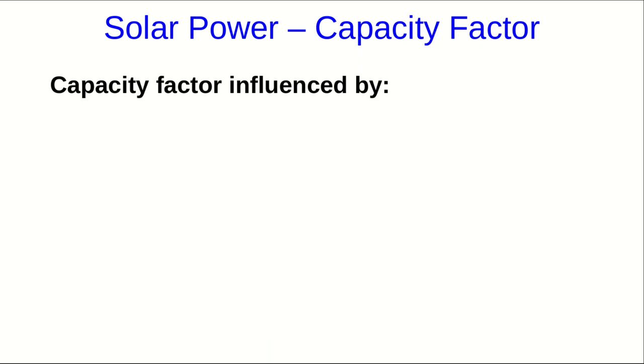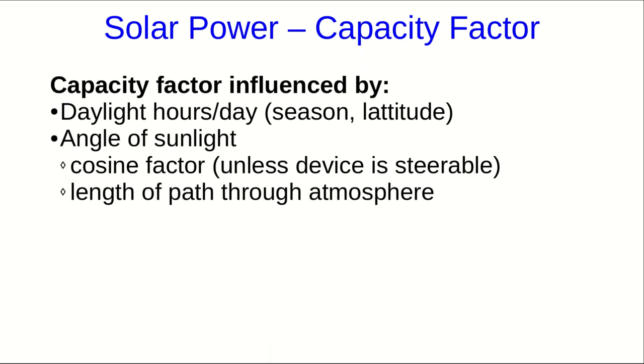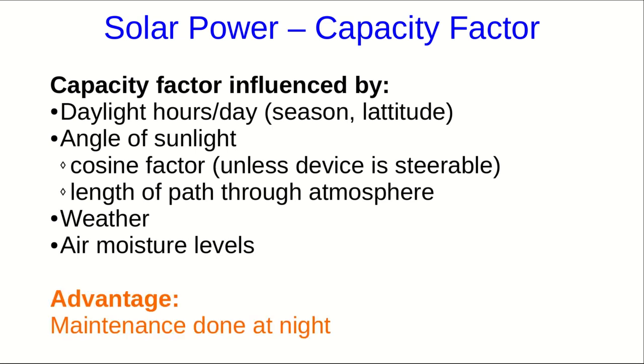This all has an influence on capacity factor, which is influenced by the number of hours of daylight, the angle of the sunlight because of the cosine factor and the length of the path that the light follows through the atmosphere, weather, and air moisture levels.